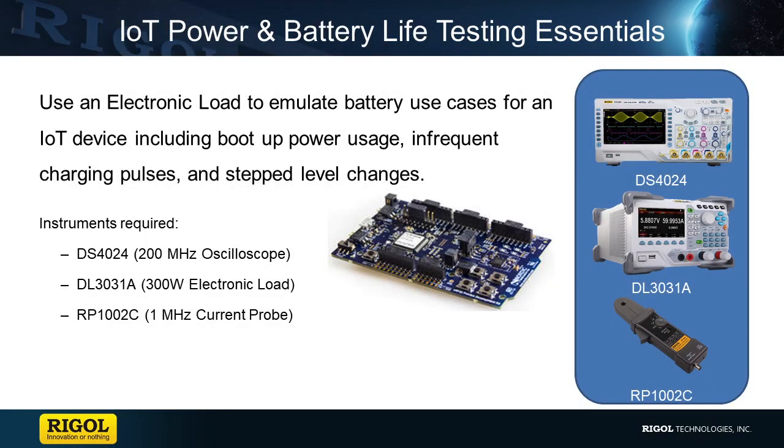By using an oscilloscope and current probe, we're able to measure the change in voltage and current over time, and then use an electronic load to emulate a similar power draw. By using an electronic load, we can simulate ideal and non-ideal voltage and current draw over time. Together, these instruments make up an affordable package for IoT testing.